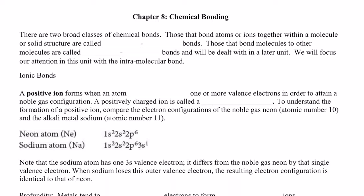So to begin with, there are two broad classes of chemical bonds. Those that bond atoms or ions together within a molecule or solid structure are called intramolecular bonds. Those that bond molecules to other molecules are called intermolecular bonds and will be dealt with in a later unit. This unit we will focus on intramolecular bonds, and there are a couple of different types of intramolecular bonds.